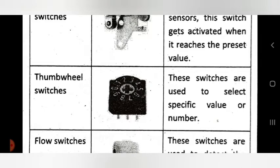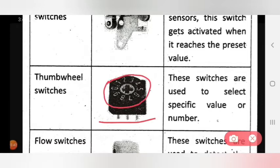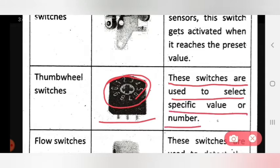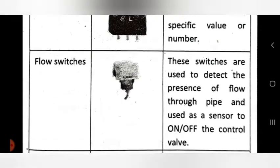The next input device is the thumb wheel switch. The function of these switches is that they are used to select a specific value of numbers. If you have a specific value or specific number to select, you can use this switch.